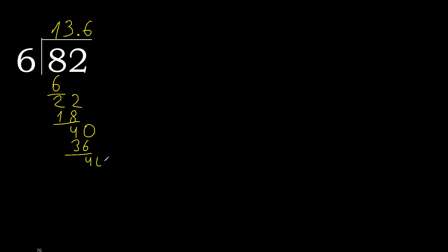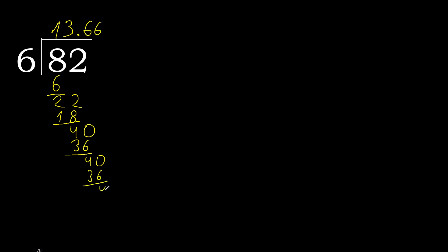Subtract. Complete. Bring down: 40 again. Complete 0 — the decimal point is here. 6 multiplied by 6 is 36. Subtract. Complete.